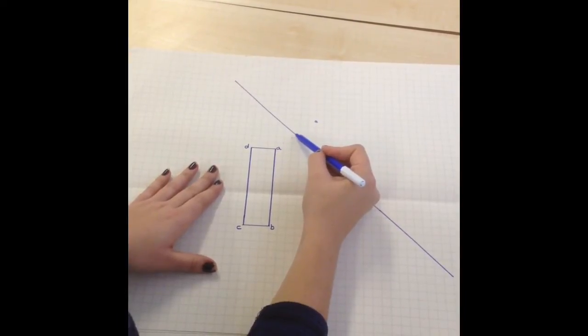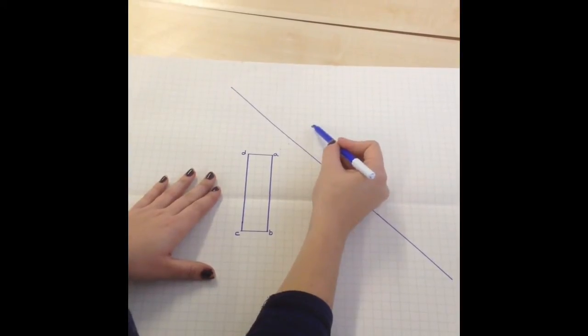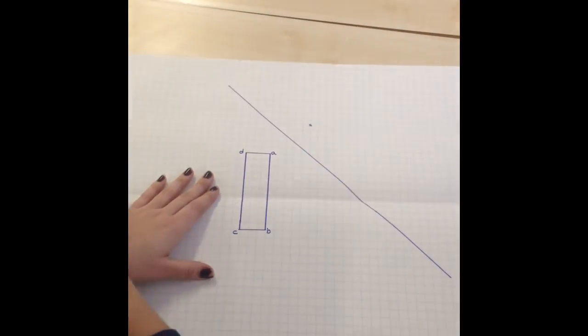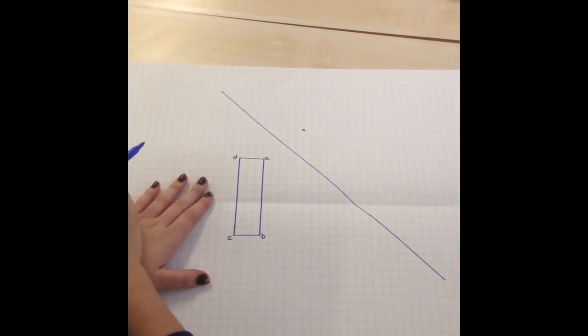Now you can also do it diagonally so I could go 1 diagonally, 2 diagonally, 2 and a half and then I'd go a half, 1 and a half, 2 and a half and as you can see point A ends up being in the same place. It depends how you want to do it.